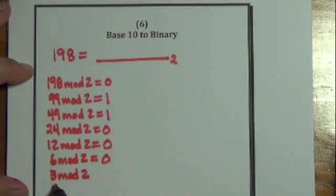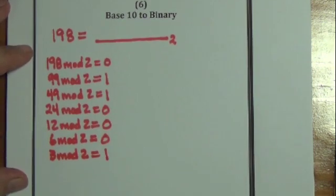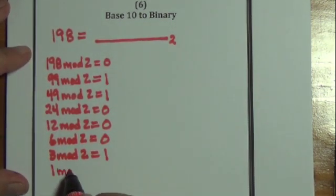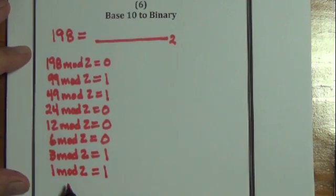Now 2 goes into 3 1 time with a remainder of 1. This time the quotient is also 1. Now 2 goes into 1 0 times with a remainder of 1. When the quotient is 0, that's when we stop.